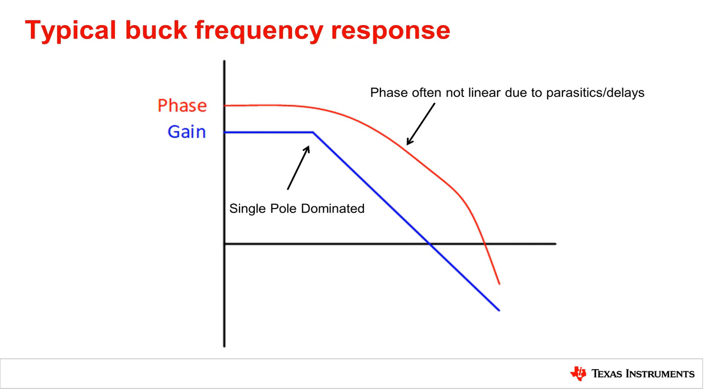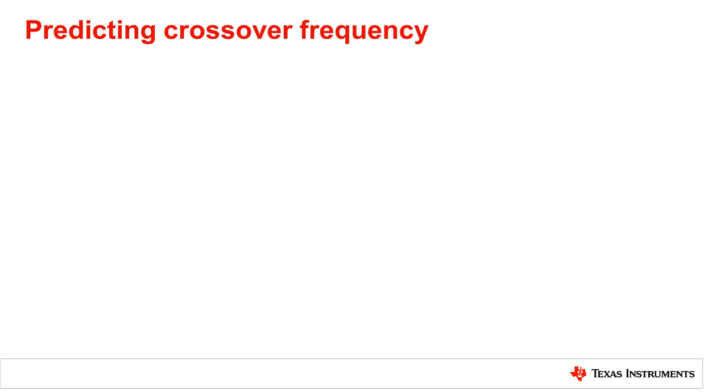What this ends up doing is making it much easier to predict the gain but not the phase when looking to control the frequency response of the converter. Since the gain is easier to predict compensation can be found by controlling it.